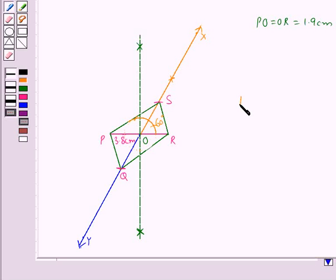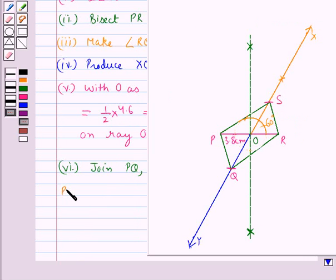And in this, we have diagonal PR is equal to 3.8 cm, diagonal QS is equal to 4.6 cm, and angle between the two diagonals, angle ROS is equal to 60 degrees. Thus we have PQRS is the required parallelogram.